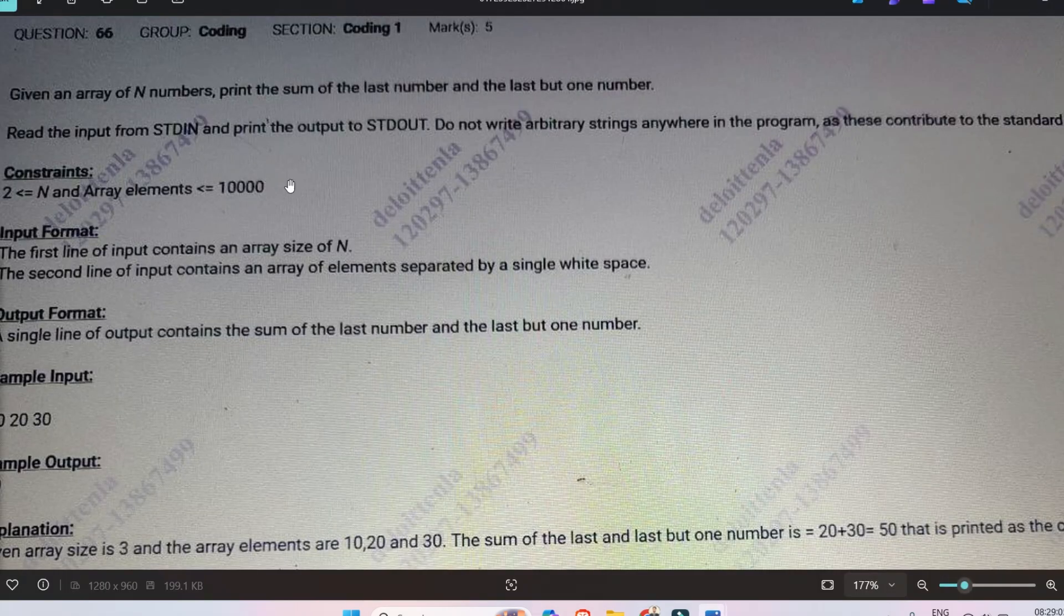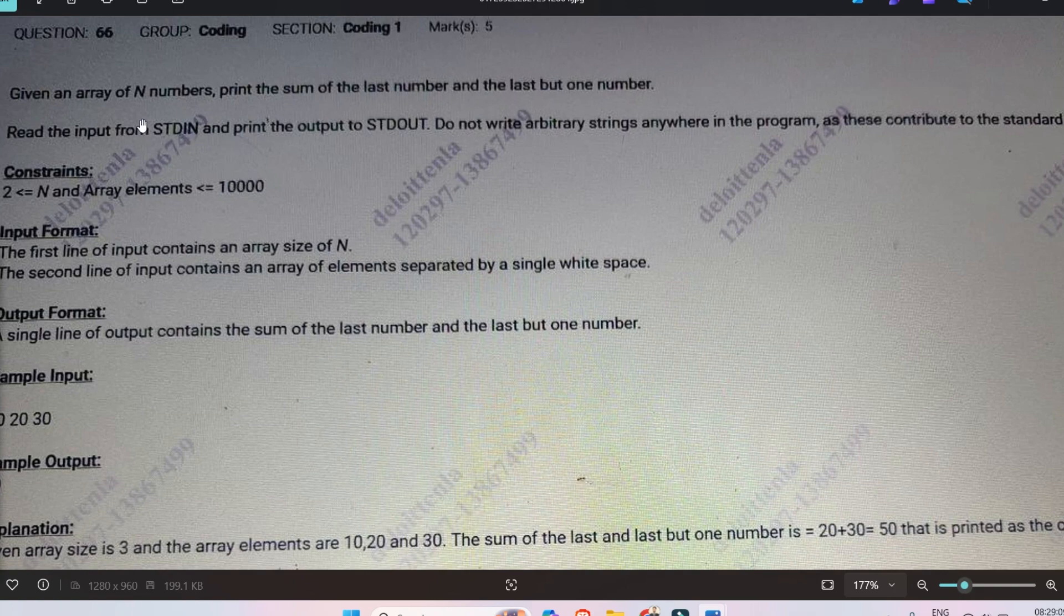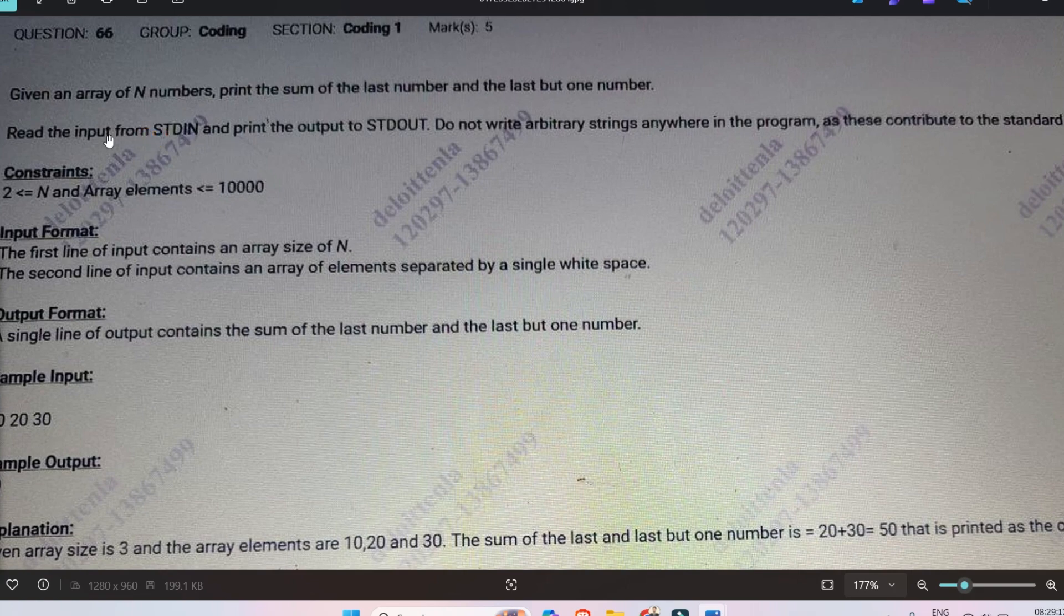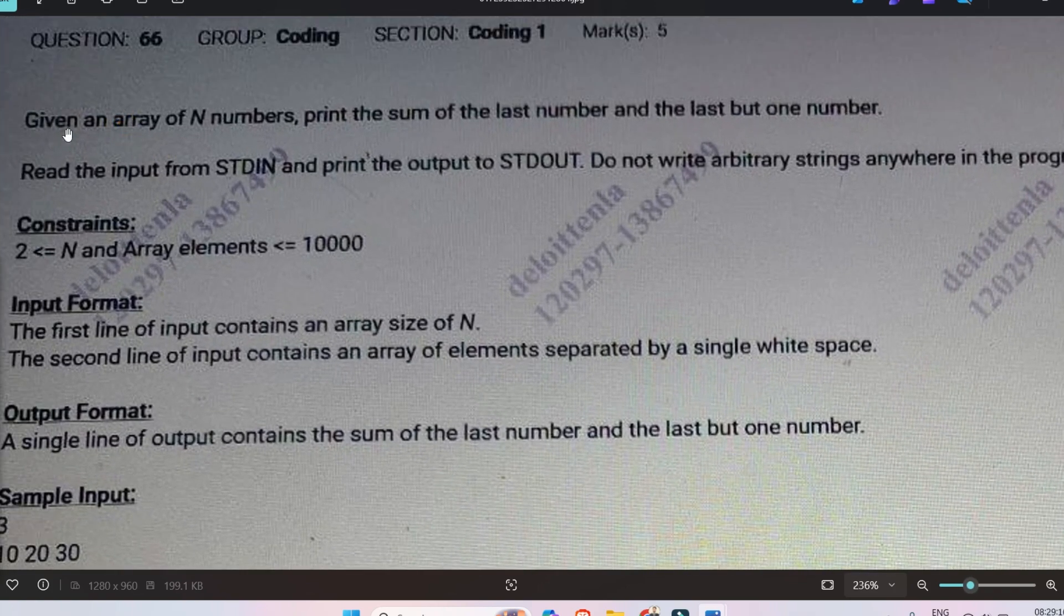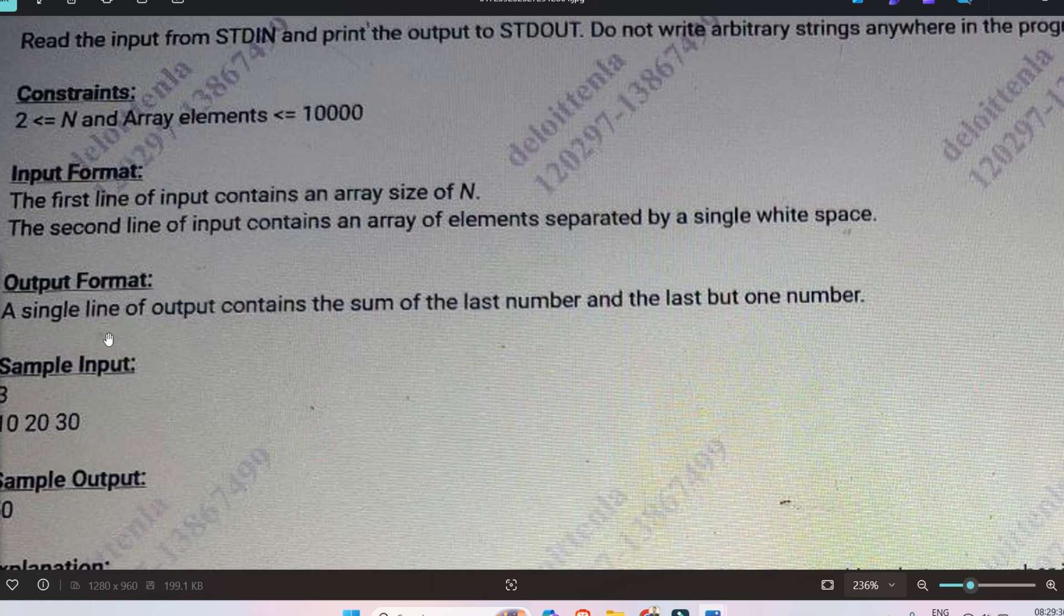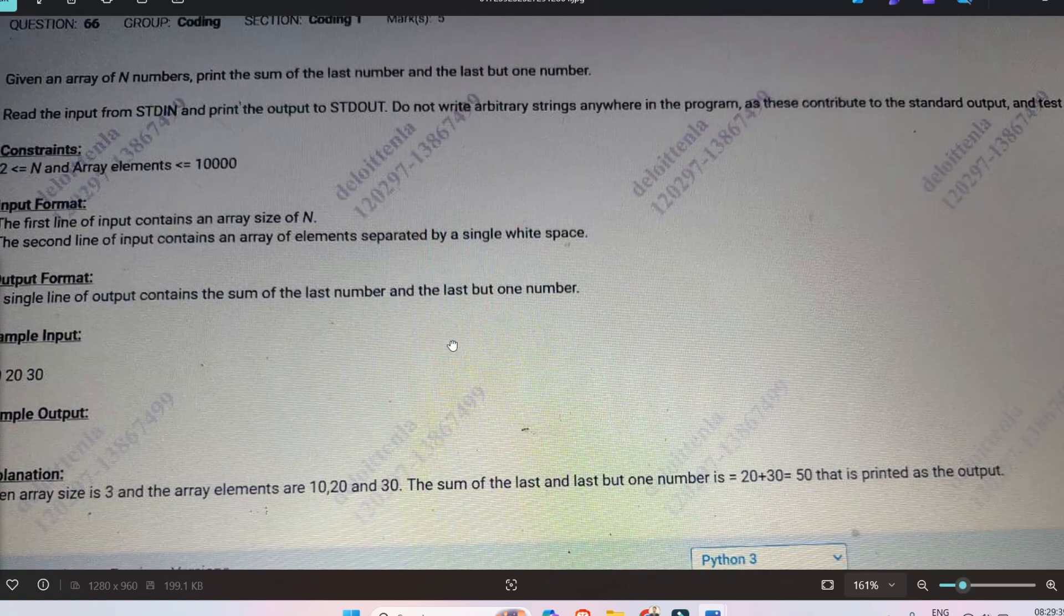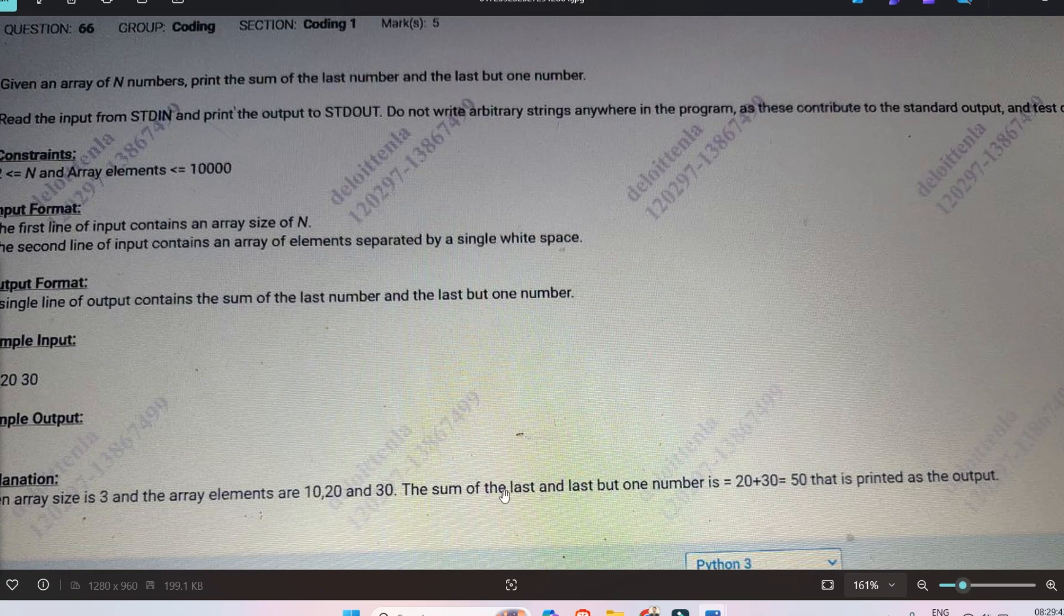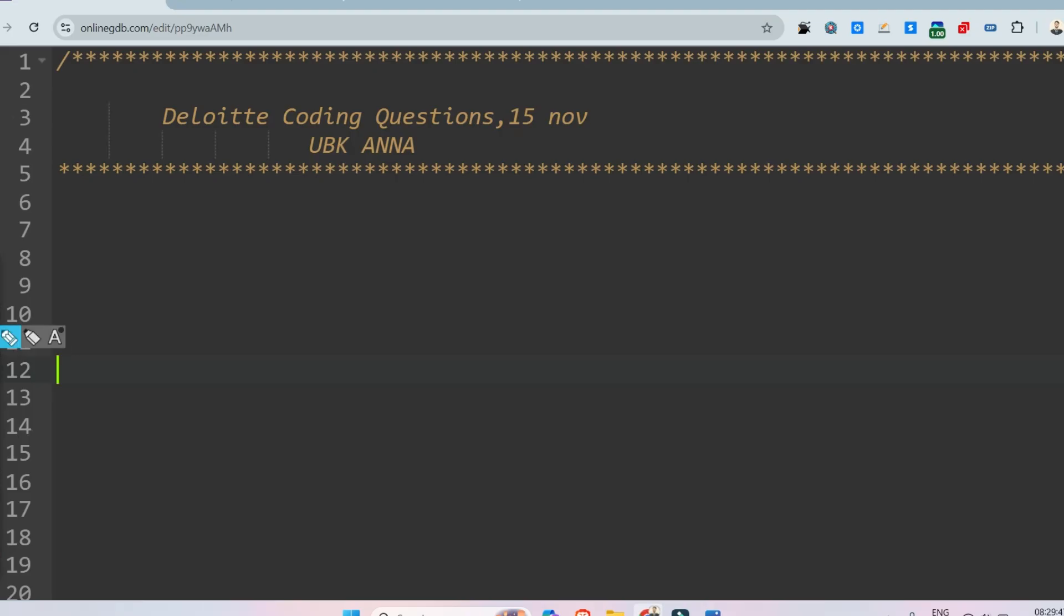Let me share the first coding question. The first question is regarding this: given an integer array of N numbers, print the sum of last number and the last but one number. So constraints are given, input format is like first one will be array size and second line will be the elements of the array. Output format will be single line of output contains the sum of the last number and last but one number. Here are the sample inputs given, so let me just go to the panel compiler and discuss the sample input output.